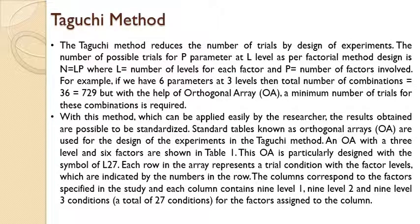The Taguchi method reduced the number of trials by design of experiment. The number of possible trials for a parameter at L level as per factorial method design is n = L^p, where L is the number of levels for each factor and p is the number of factors involved. With this method, which can be applied easily by researchers, the results obtained are possible to be standardized.